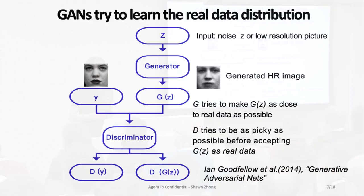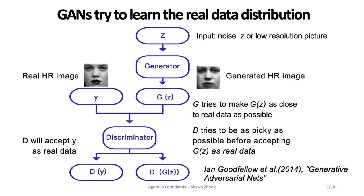A couple of words about GANs: a GAN tries to learn the real data distribution. There are two networks — the generator and the discriminator. These two networks work with each other and also against each other. When they finally converge, the generator will produce images as close to the real data as possible, while the discriminator tries to be as picky as possible before accepting generated data as real.